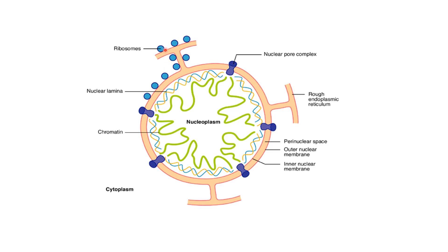In summary, the nuclear envelope is made up of a double membrane. Both membranes are separated from each other, and the outer membrane is connected with the rough endoplasmic reticulum, while the inner and outer membranes, when fused, form nuclear pores responsible for the transport of different materials. The nuclear envelope surrounds and protects the nuclear material, and the nuclear pores regulate transport of material into and out of the nucleus.